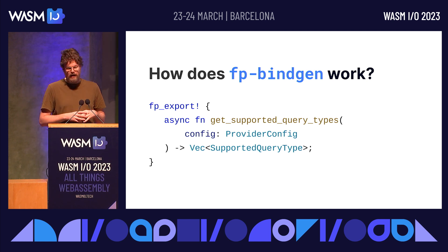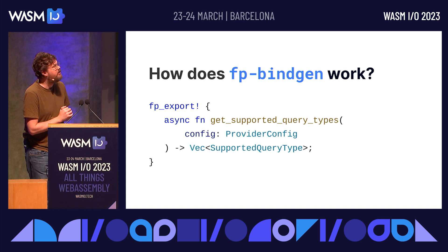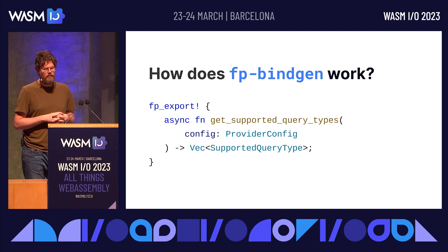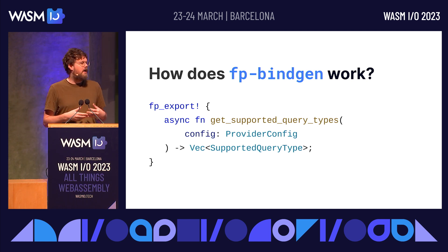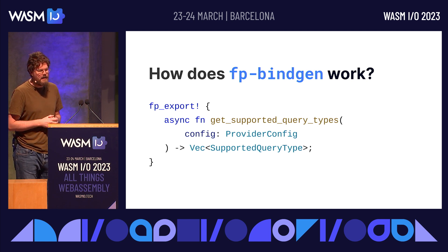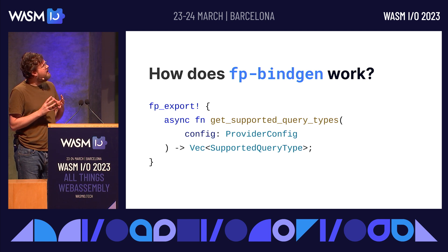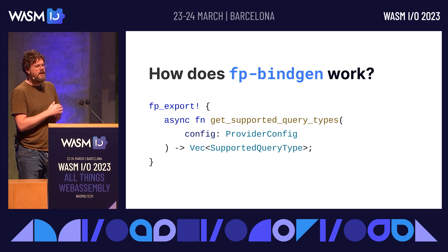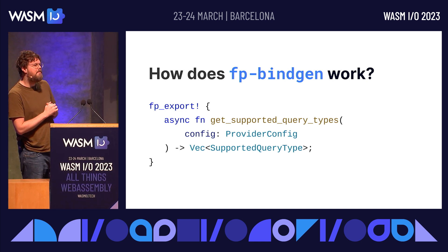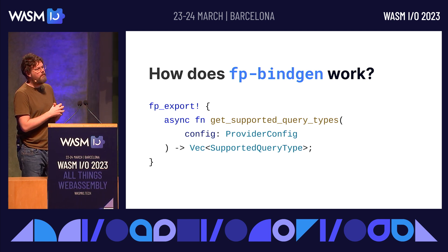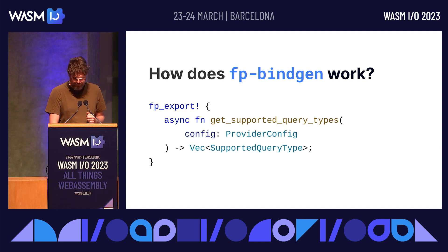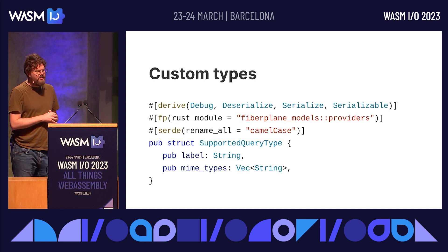One interesting thing to highlight is that FP bindgen generates runtimes and takes care of all serialization issues. It uses MessagePack for serialization, which is a protocol rather like JSON except that it's binary, making it more performant especially when passing binary data back and forth. Another interesting aspect is that because it is JSON-like in nature, you can easily extend your structs with new fields without breaking backwards compatibility. If you're trying to build a plugin ecosystem, this is a very valuable property — you can keep evolving your protocol and all plugins stay compatible even when you deploy new runtimes.